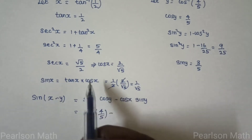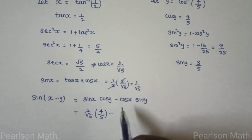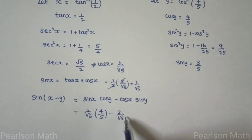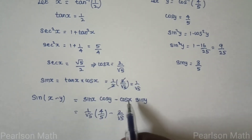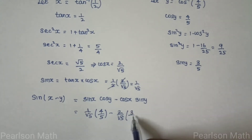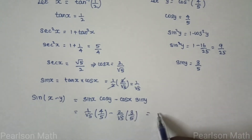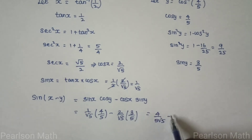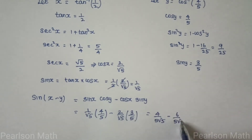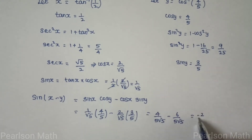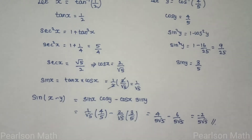Now computing sin inverse of 1/2 minus cos inverse of 4/5: sin x equals 1 by root 5, cos x equals 2 by root 5, sin y equals 3 by 5. The answer is 4 by 5 root 5 minus 2 times 3 over 5 root 5, giving 4 minus 6 over 5 root 5, which equals minus 2 by 5 root 5.